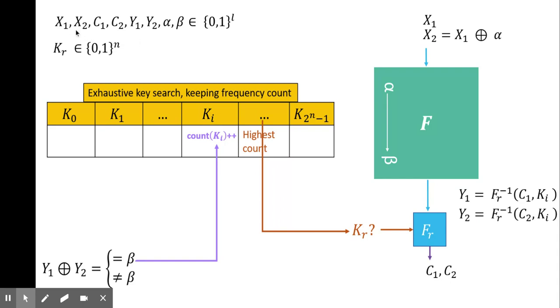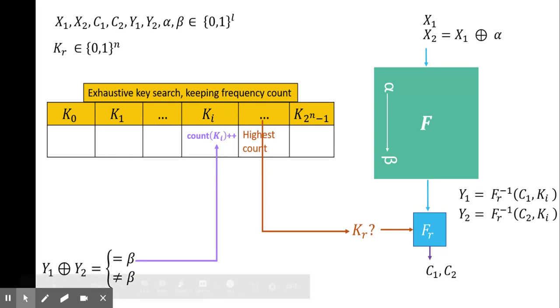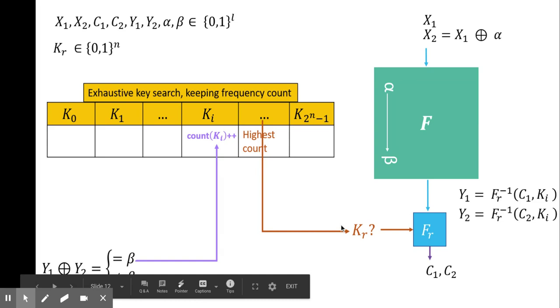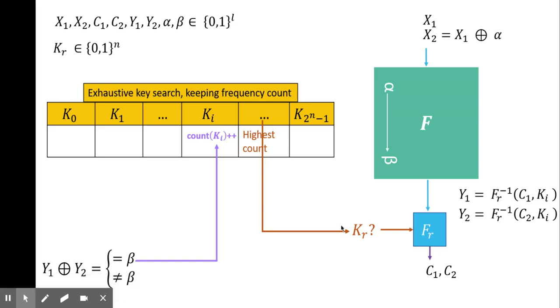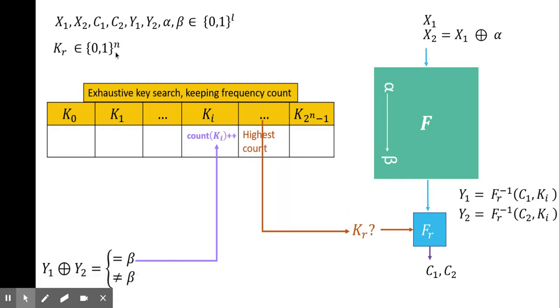Similarly for X2, C1, C2, Y1, Y2, alpha, beta, they all will be L bits. The system will output two cipher texts C1 and C2 corresponding to the plain text X1 and X2. Now in order to find Kr, we should note that round keys are n bits. So Kr can be anything from 0 to 2 to the power n minus 1.